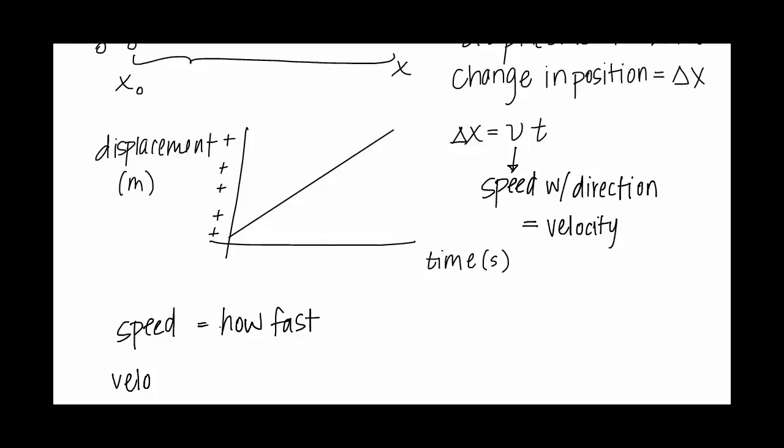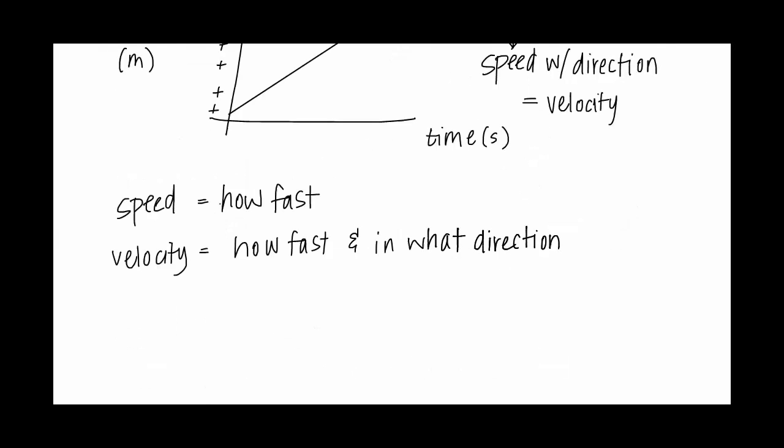So speed is how fast. But velocity is how fast and in what direction. Speed is what we call a scalar, meaning it's just magnitude or number. Magnitude is a fancy word for number. A vector, which velocity is a vector, is the number and a direction.